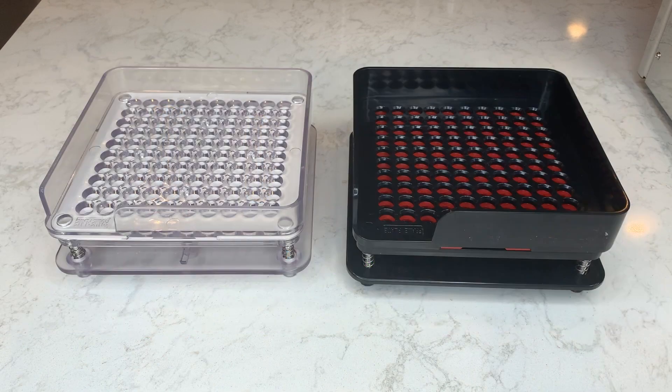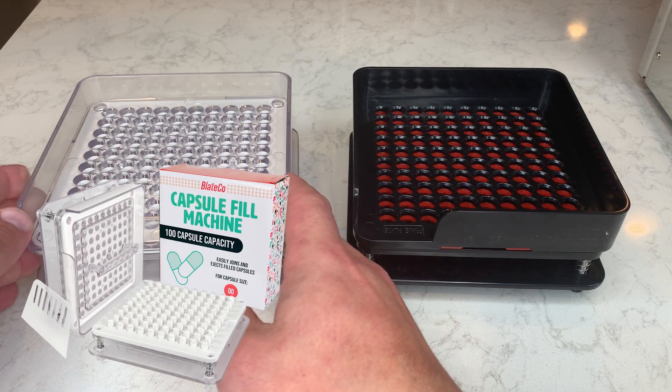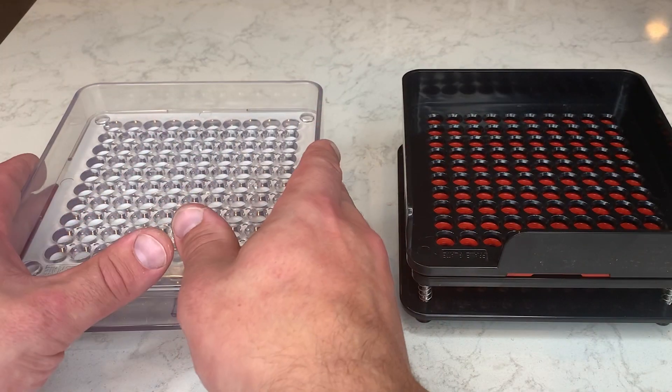This one's our triple zero, which is black and red. And then right here, we have our BladeCo transparent Core Series model. The real difference between these two is obviously that this one has color and this one is transparent.